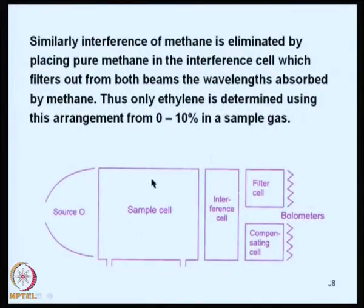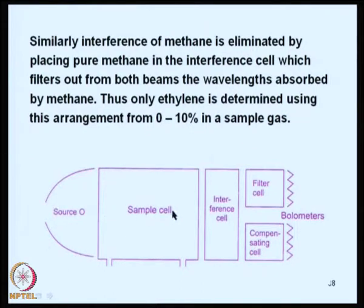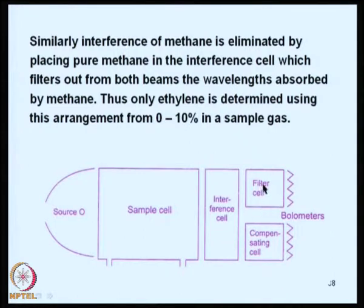Another arrangement has a sample cell but no reference cell; instead, you have an interference cell, a filter cell, and a compensating cell. As the radiation from the source is directed towards the sample cell, absorbance will take place and the interference cell will absorb all other radiations except from the analyte. The radiation from the analyte falls onto the bolometers, and the filter cell and compensating cell work in tandem to give the signal.